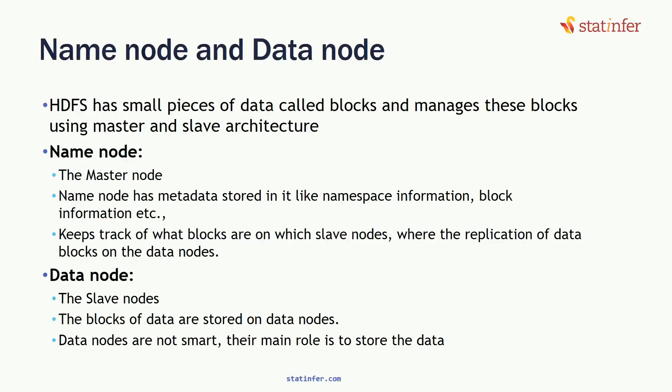Within Hadoop, it takes care of the name node and data node. HDFS manages data using a master and slave node architecture. Multiple machines are connected as one coherent system. One machine is taken as the master node, also known as the name node. The name node takes care of how the whole computation is happening — it manages metadata information and keeps track of where all the blocks are kept. The metadata itself — data about data — is so much that one node must take care of all job tracking, data tracking, where all the slave nodes are, and what computations are happening.